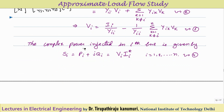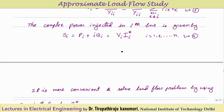Now coming to the complex power injected into the ith bus: Si = Pi + jQi, which can be obtained by Vi into Ii conjugate. To calculate the power we have to take Vi into Ii conjugate. Why we take the conjugate is discussed in the basic electrical engineering playlist; I am assuming you already have that idea.